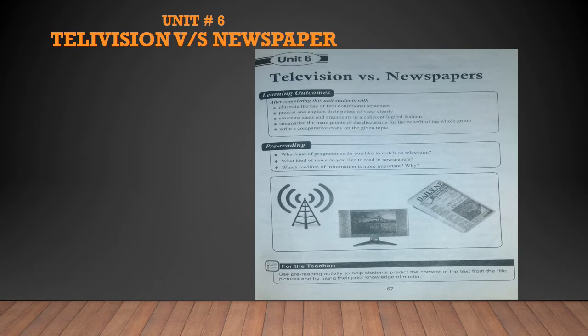Moving forward, chapter number 6 is 'Television versus Newspaper.' This chapter is about print media and electronic media. Television is related to electronic media and newspaper is related to print media. In this chapter, there are some advantages and disadvantages of both medias, as well as some differences between them.